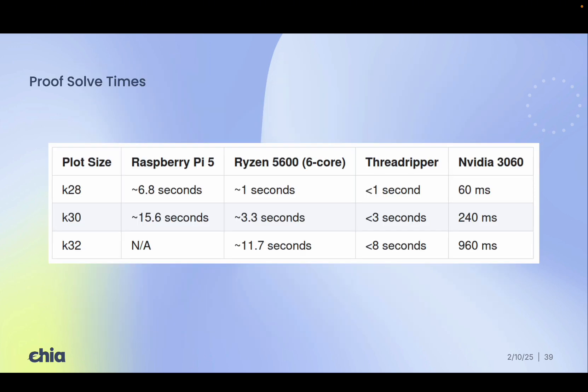We've published reference code so that you can test solver performance on your own system. Other results are pretty strong. Even a Raspberry Pi 5 can solve k28 proof in under 7 seconds. Since farmers have 20-30 seconds to submit a winning proof, CPU-only systems can still handle k32s, although staying under 5 seconds is recommended for more reliable performance.